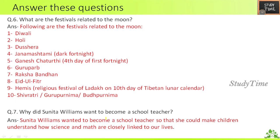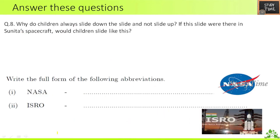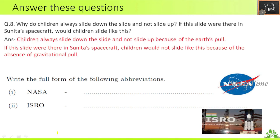Seventh question — why did Sunita Williams want to become a school teacher? She wanted children to understand how science and mathematics are closely linked to our life. Eighth question — why do children always slide down a slide, not slide up? Because of the pull of the earth. If this slide were in Sunita's spacecraft, would children slide like this? No, because of the absence of gravitational pull.